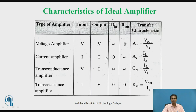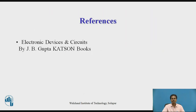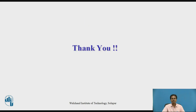This table shows the characteristics of ideal basic amplifiers — voltage amplifier, current amplifier, trans-conductance amplifier, and trans-resistance amplifier — their input signals, output signals, input impedance, output impedance, and the transfer ratio or gain of each amplifier. This serves as a reference summary. Thank you.